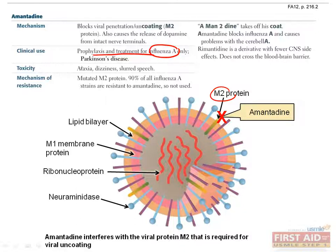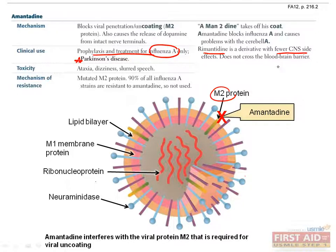Amantadine does have utility in the treatment of Parkinson's disease, as this drug also stimulates the release of dopamine from intact nerve terminals. The unpleasant cerebellar side effects, including ataxia, dizziness, and slurred speech, are also a deterrent to its use. Rimantadine, another derivative, has fewer CNS side effects and does not cross the blood-brain barrier.